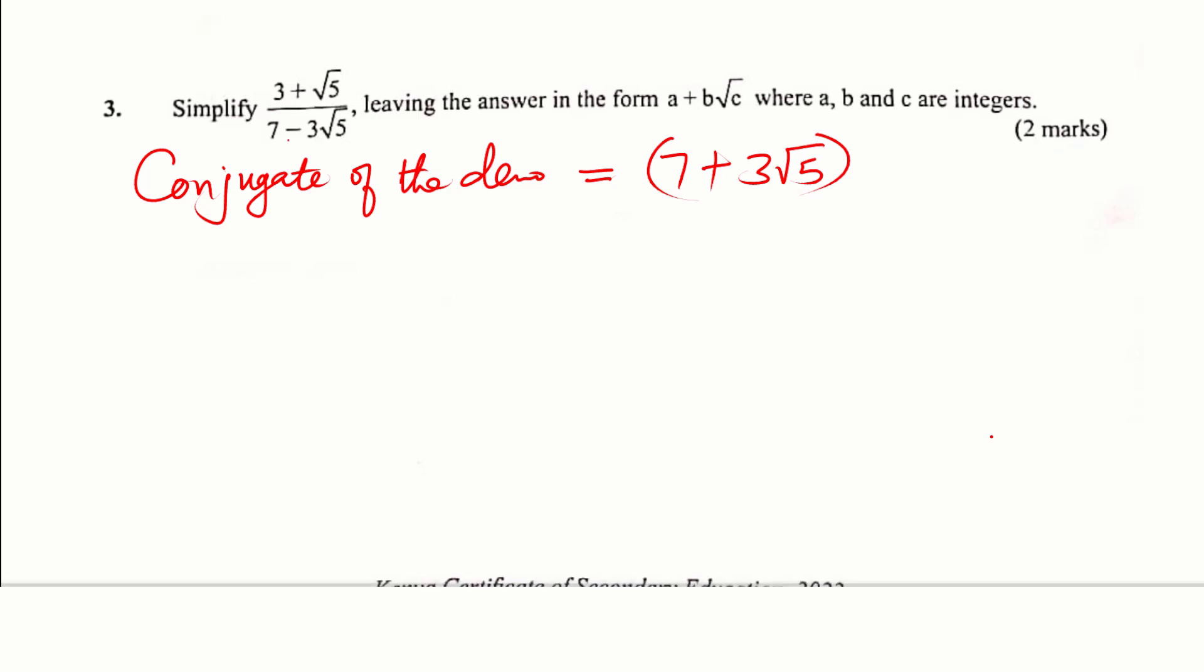By just changing the sign, you can see 7 minus 3 root 5, we just change to get the conjugate. From positive to negative, negative becomes positive. Now we multiply both the numerator and the denominator by this.